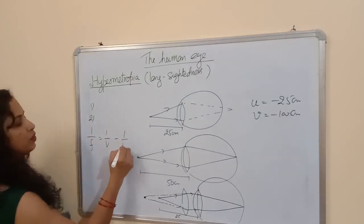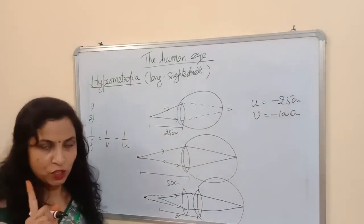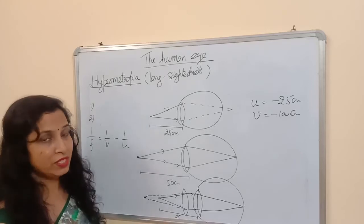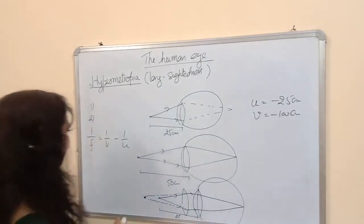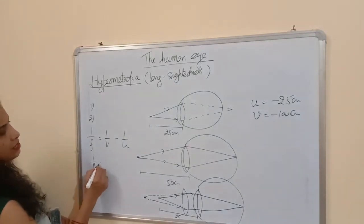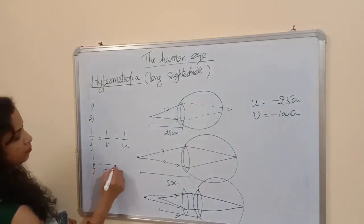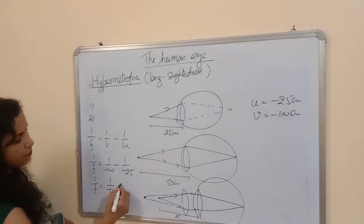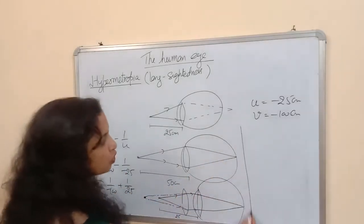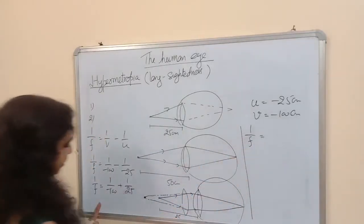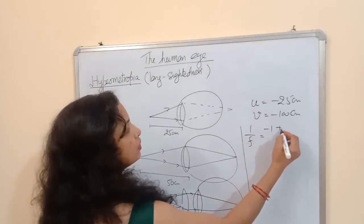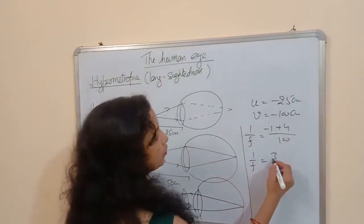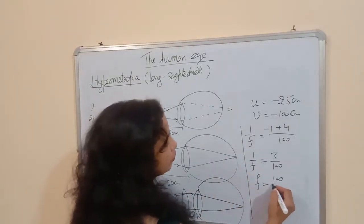Using the lens formula with v = −100 cm and u = −25 cm: 1/f = 1/(−100) − 1/(−25) = −1/100 + 1/25. Taking LCM of 100: 1/f = (−1 + 4)/100 = 3/100. Therefore f = 100/3 cm. The positive sign of the focal length confirms that the lens is a convex lens.